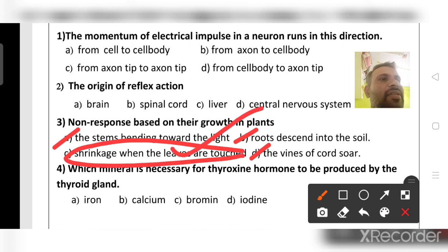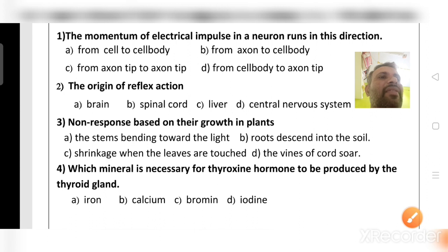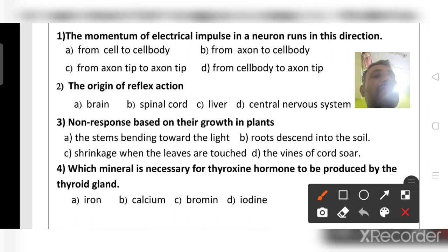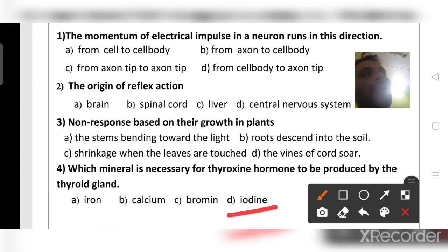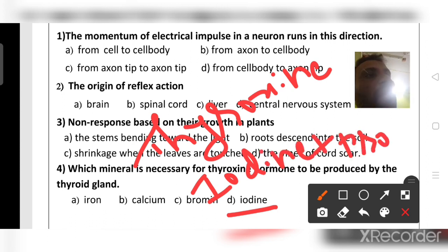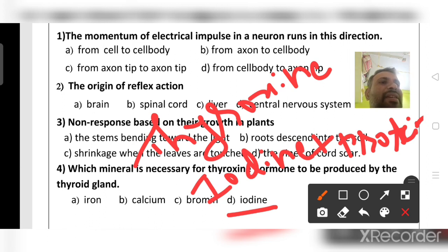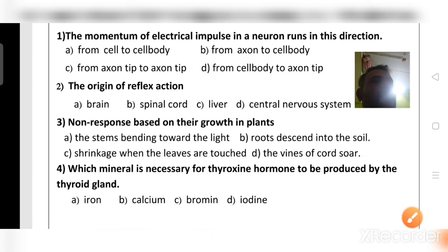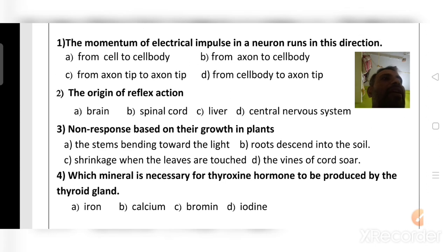Which mineral is necessary for thyroxine hormone to be produced by the thyroid gland? The answer is iodine. Thyroxine is a mixture of iodine and protein. That is why we eat iodized salt. Deficiency of iodine leads to a disease called goiter.